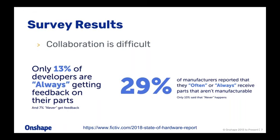10% say that never-manufacturable situation never happens, which is probably those who've worked in close partnership for years. On the feedback side, 30% are always getting feedback on parts and 7% never get any. The 7% who never get feedback might be great designers, or their manufacturer just builds as-is without questioning. There's clearly a disconnect between design and manufacturing, with a lot of issues around both collaboration and communication throughout the design process.